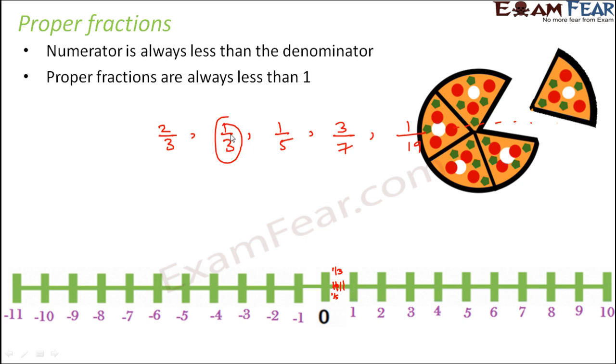That's because the total number of divisions that you actually make is dependent on the denominator, right? Like in each of these cases, for example here, how many divisions will you make? 3. Here, how many divisions will you make? 7. Here, how many divisions will you make? 19, right? And since the numerator is lesser than the denominator, you will find the fraction somewhere before 1.